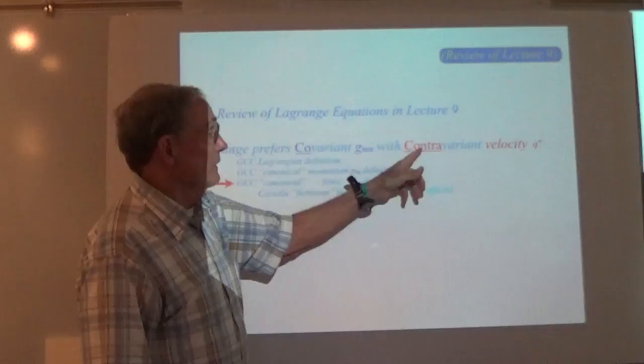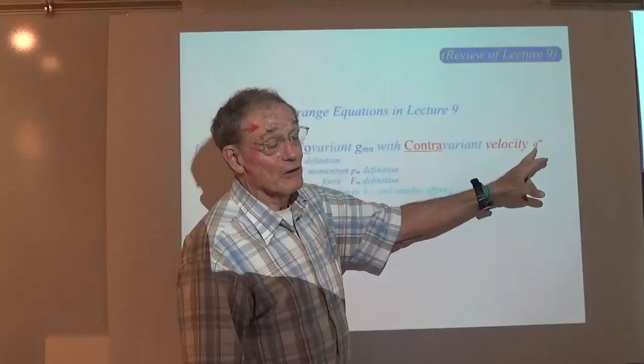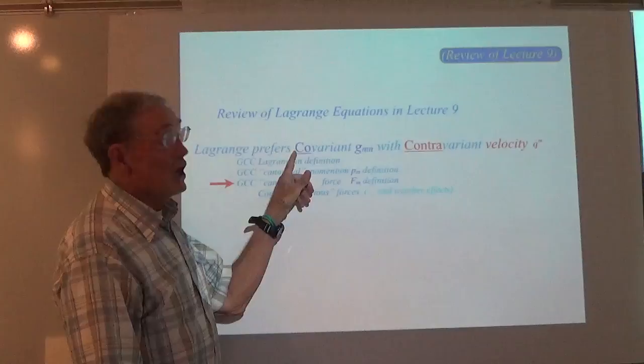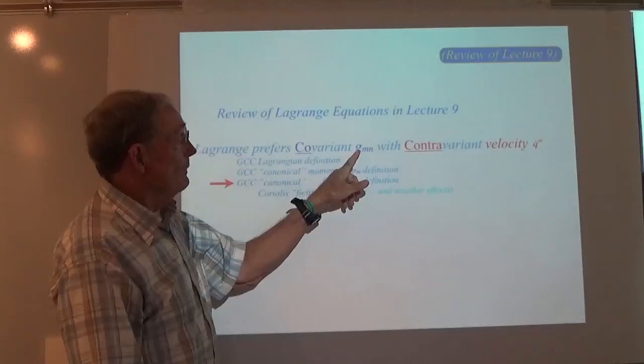Hamilton's way of doing it is different — he is not interested in using a contravariant velocity as the independent kinetic variable. He must use momentum. The momentum is a covariant quantity. So we'll be using the contravariant metric G superscript MN in order to make an invariant Hamiltonian, which we only touched on a little bit in the preceding lecture.